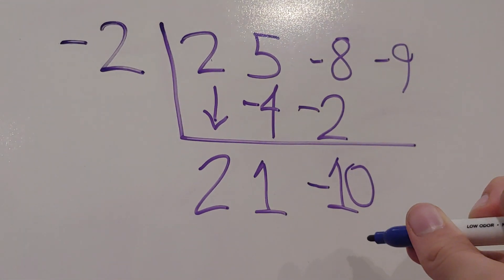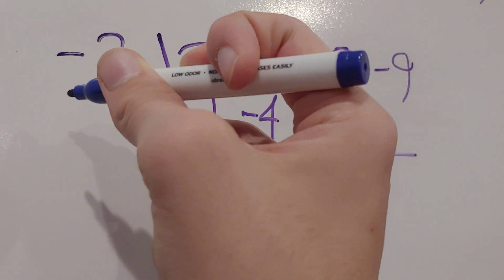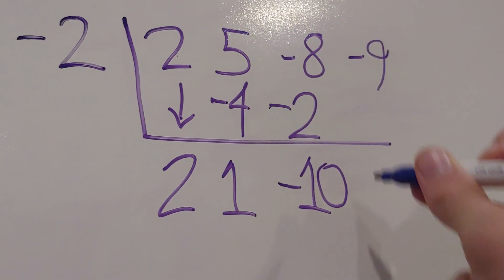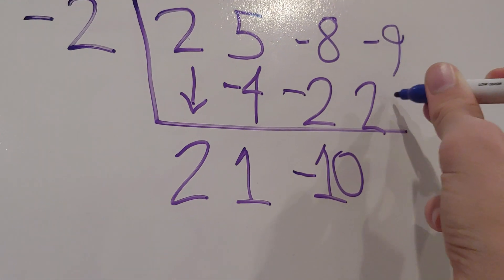Now we multiply both of these negative numbers. Negative 2 times negative 10 gives us positive 20.